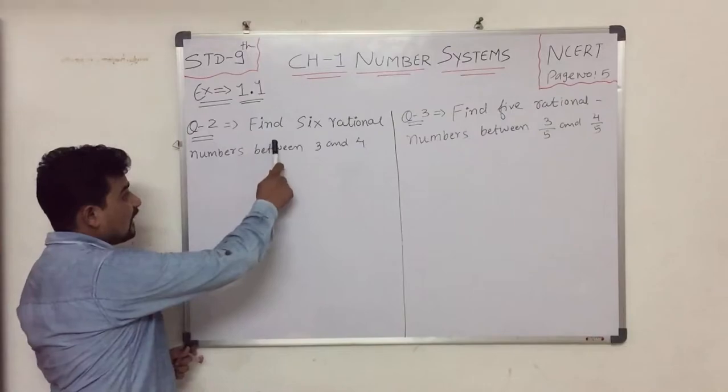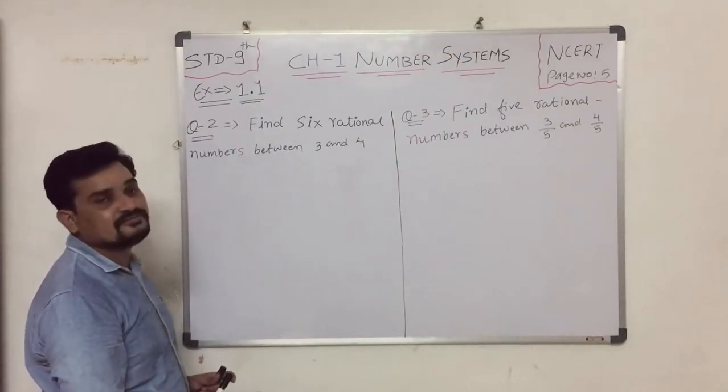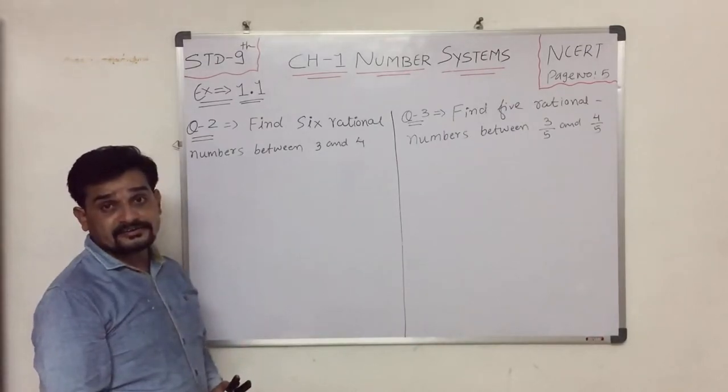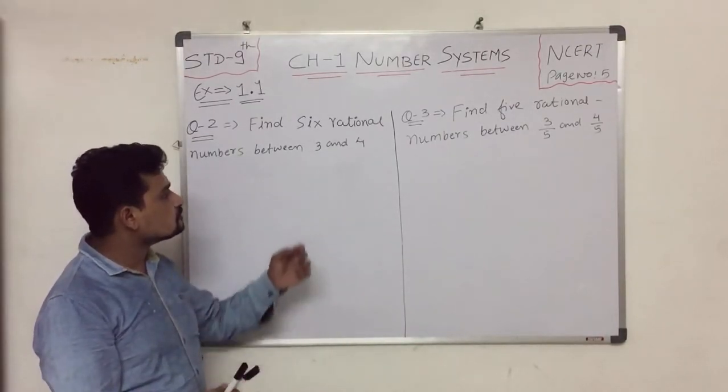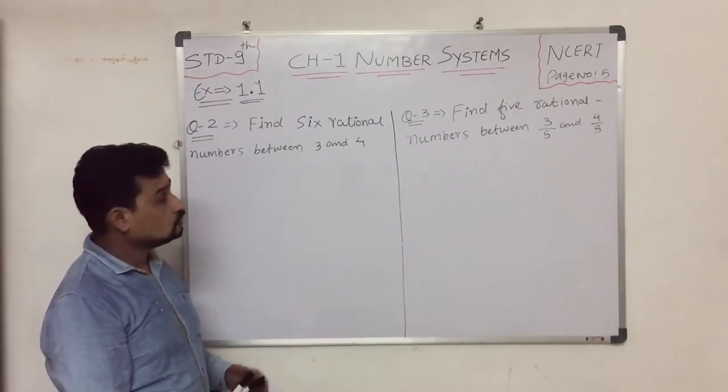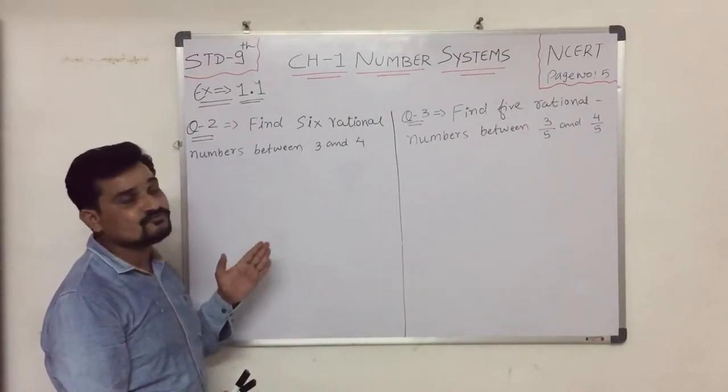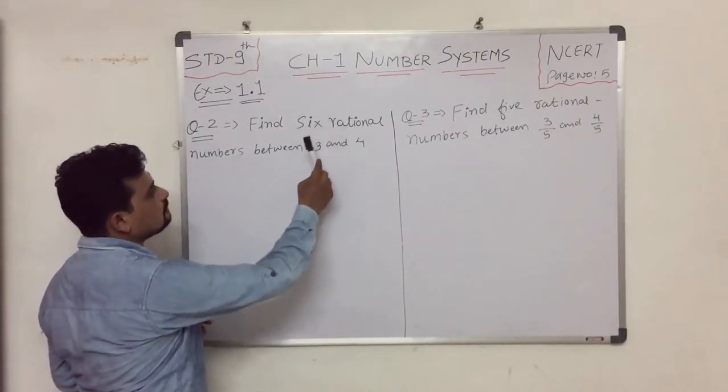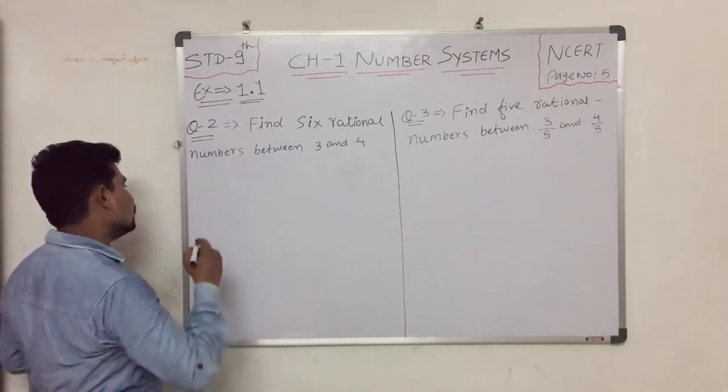Question 2 is: find 6 rational numbers between 3 and 4. We know that there are infinite rational numbers between any two numbers. So here we have to find 6 rational numbers between 3 and 4.